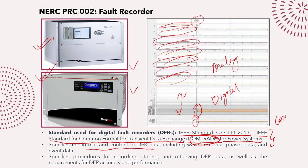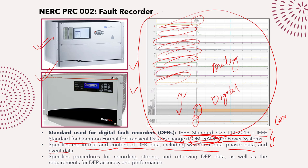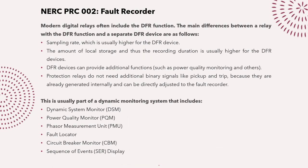The standard specifies the formatted content of DFR data, including waveform data, phasor data, and event data. It defines the triggering location, how status is recorded, how waveforms are recorded, the nominal system frequency, and the number of data samples — which enables analysis tools to perform conversion algorithms and produce the waveforms we observe. It also specifies procedures for recording, storing, and retrieving DFR data, as well as accuracy and performance requirements.